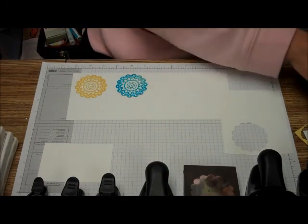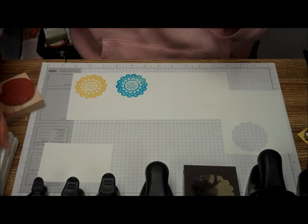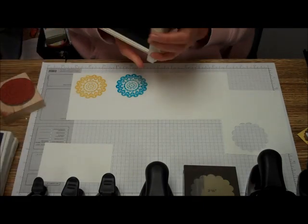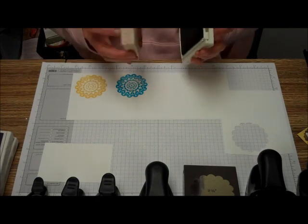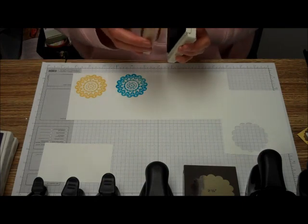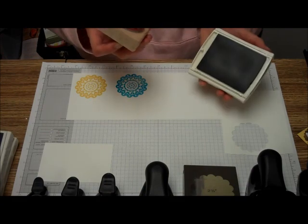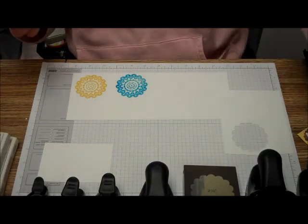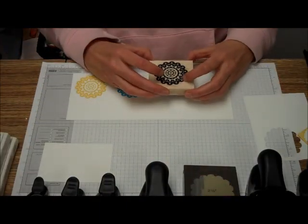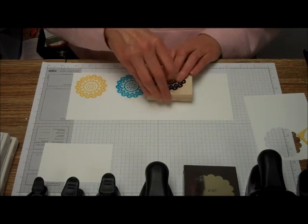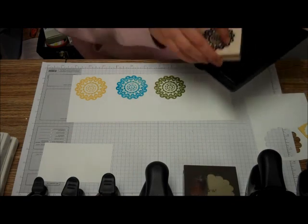We've got the Tempting Turquoise there. We're going to be cleaning that, drying that off, and then use the Old Olive. Now you notice the difference between using the Old Olive, which is the new stamp pad, compared to the Daffodil Delight and the Tempting Turquoise. You don't have to hit it and use it that much.